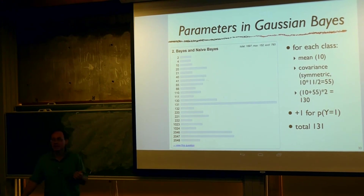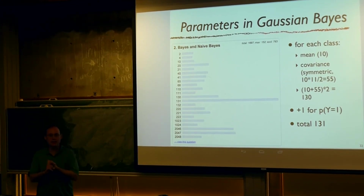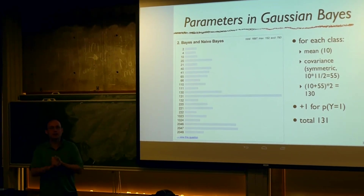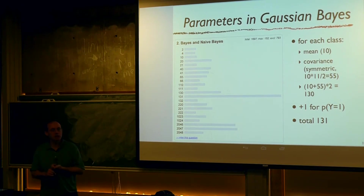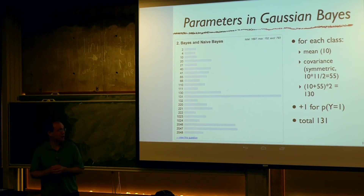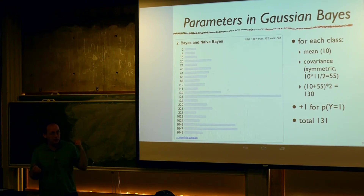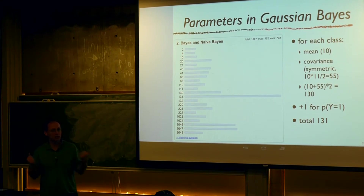Here's the correct calculation. This was with a 10-dimensional feature vector. For each class, there were 10 parameters for the mean. There's a covariance matrix which is 10 by 10, but it's symmetric, so not every parameter is independently changeable. The formula for the number of independent parameters in a symmetric matrix is d times (d+1) over 2, which gives 55 in this case. There's also a parameter for the prior probability of the classes.